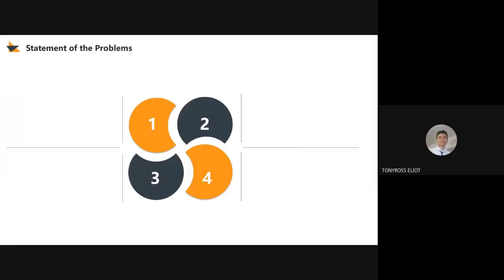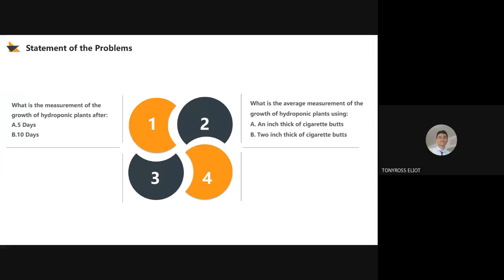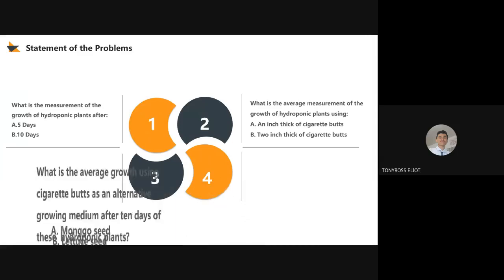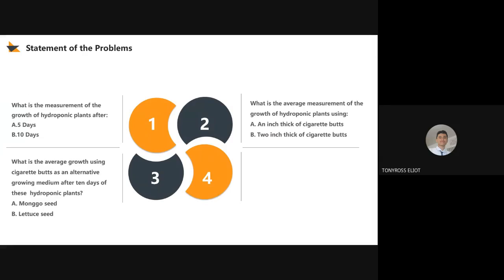Next is the statement of the problem. Number 1: what is the measurement of the growth of the hydroponic plants after 5 days and 10 days? Number 2: what is the average measurement of the growth of the hydroponic plant using 1-inch thick and 2-inch thick of cigarette butts? Number 3: what is the average growth using cigarette butts as an alternative growing medium after 10 days for monggo seeds and lettuce seeds? Number 4: is there a significant relationship between the level of the growing medium and the growth of the hydroponic plants?